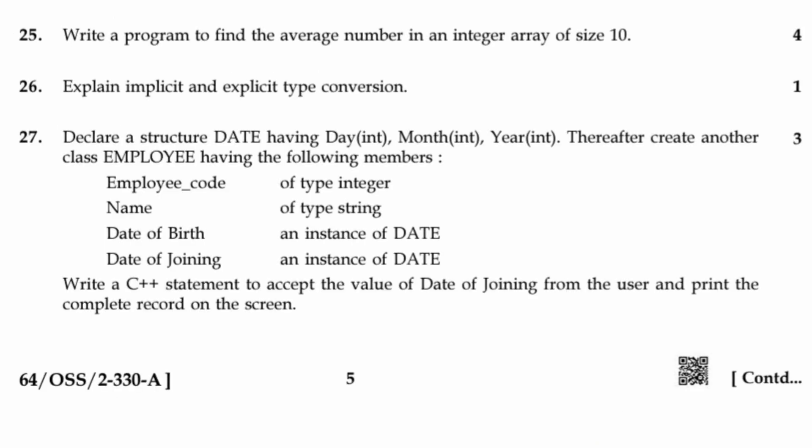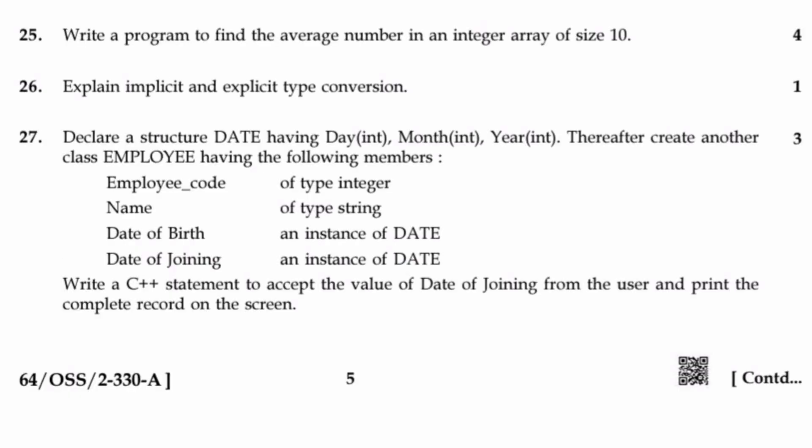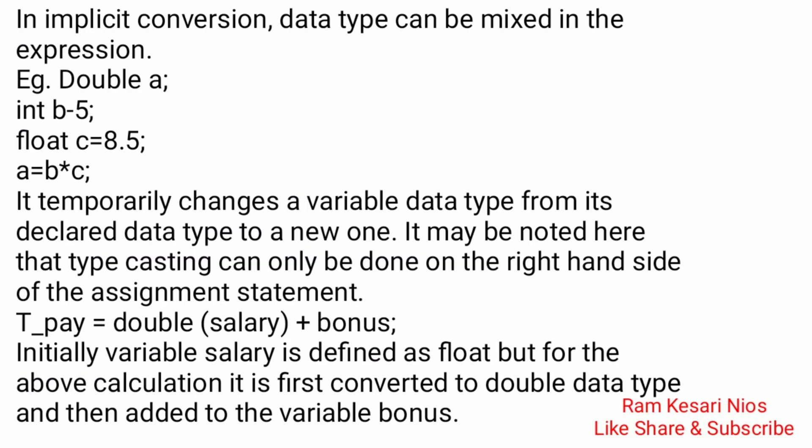Question 25: Write a program to find the average number in an integer array of size 10. Pause the video and see the answer. Question 26: Explain implicit and explicit type conversion. In implicit conversion, data types can be mixed in an expression. For example: double a; int b = 5; float c = 5.5; a = b * c. It temporarily changes a variable's data type. Type casting can only be done on the right-hand side of the assignment statement: T_pay = (double)salary + bonus. Here salary is defined as float but is first converted to double and then added to bonus.